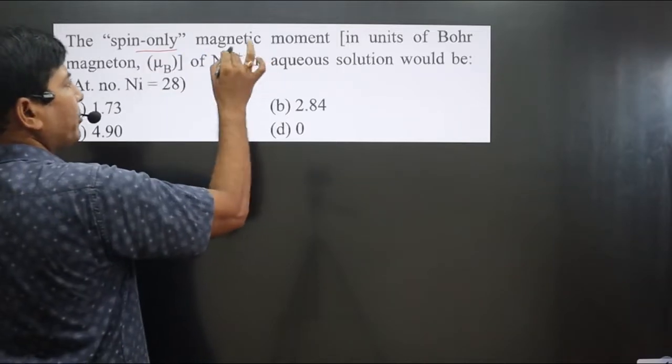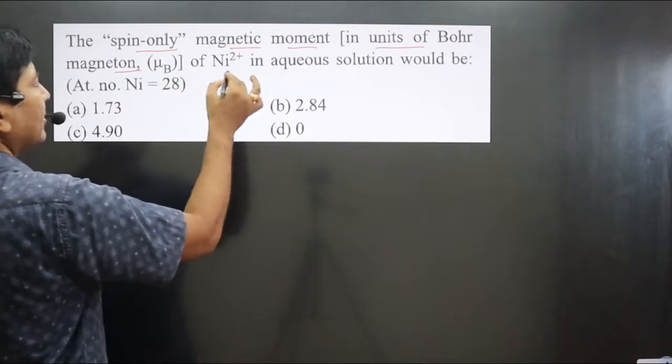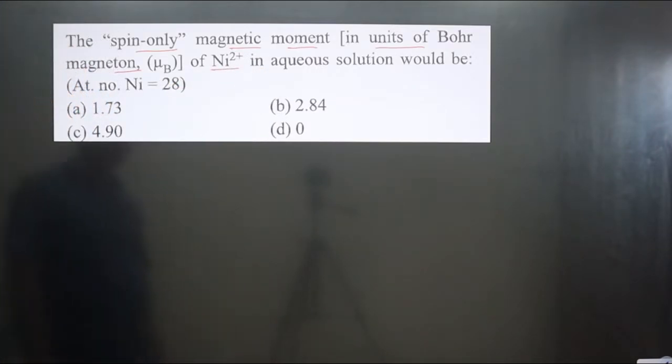The question says the spin-only magnetic moment in units of Bohr magneton of nickel 2 plus in aqueous solution would be. We have to calculate spin-only magnetic moment.